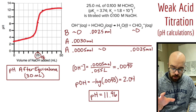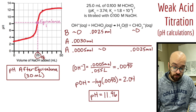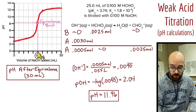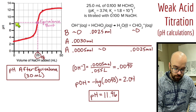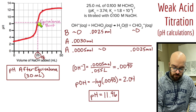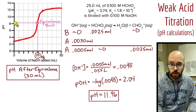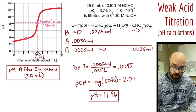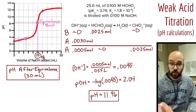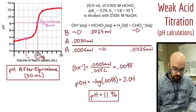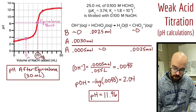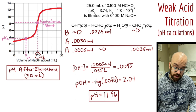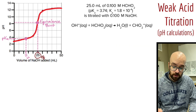Two important points on the titration curve: first, the equivalence point at 25 milliliters with pH 8.22 — found using MV = MV at the start, identifiable on the graph as the most vertical region. Second, the half equivalence point at 12.5 milliliters, where the pH equals the pKa of 3.74 — allowing you to read the pKa directly from the graph. Both are critical landmarks for weak acid titration curves.